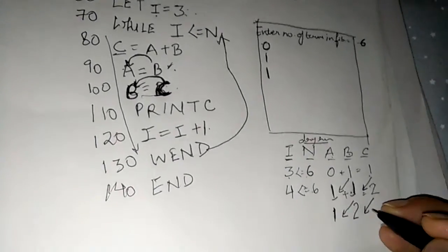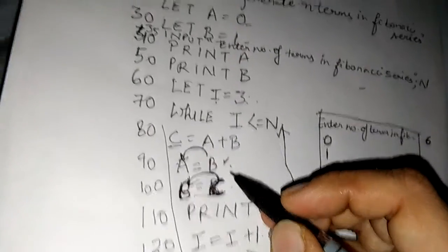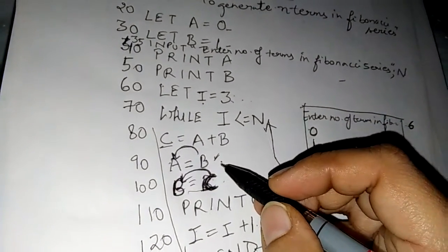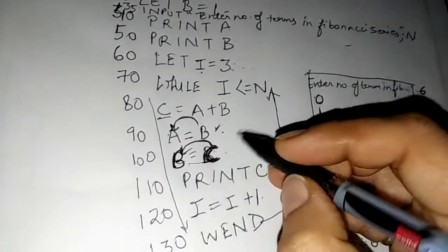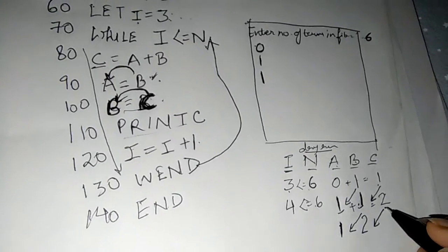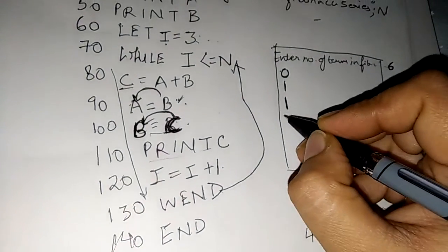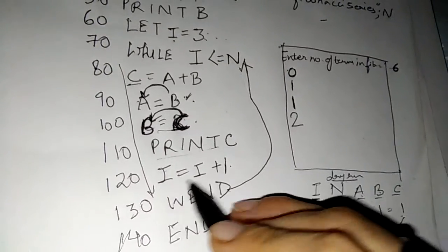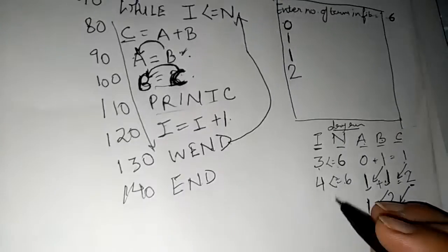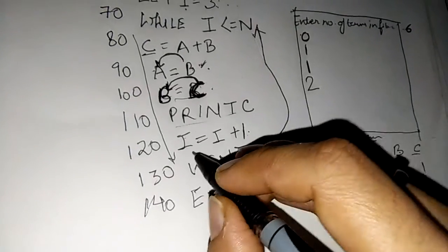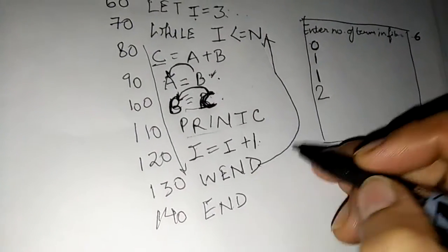You will have to check your programs by doing a dry run before finalizing. After those two swapping statements, print C. The value of C last time was 2, so it prints 2 — this is the fourth term. Now I becomes 5. I is equal to I plus 1, so I becomes 5. Again it will check: 5 is less than or equal to 6 — it is true. And again these statements will be executed.